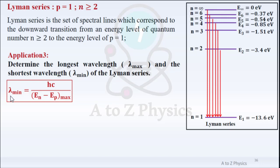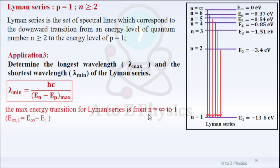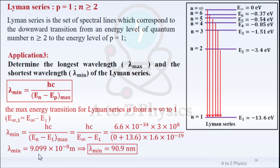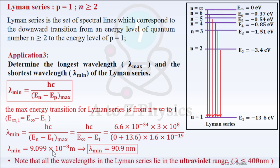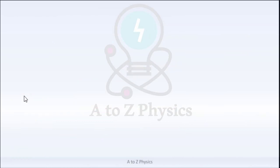The minimum wavelength of the Lyman series equals Hc over (EN minus EP) max. The maximum energy transition of the Lyman series is from N = infinity to N = 1. Replacing Hc, E∞, and E1, we get λmin = 9.099×10⁻⁸ m, which equals 90.9 nanometers. Note that all wavelengths in the Lyman series lie in the ultraviolet region, lambda ≤ 400 nm.